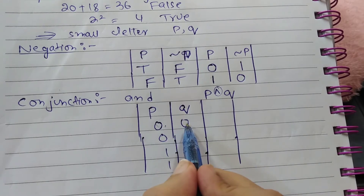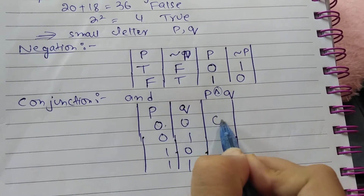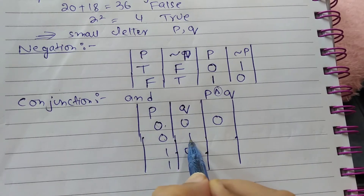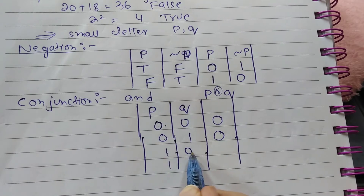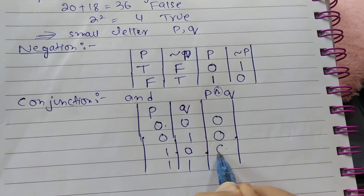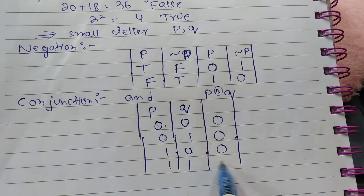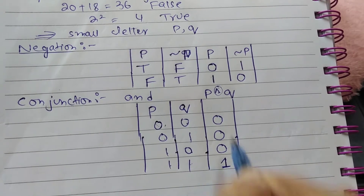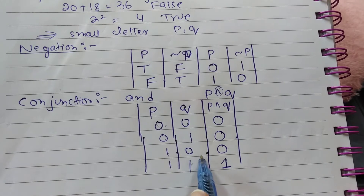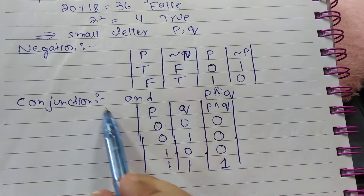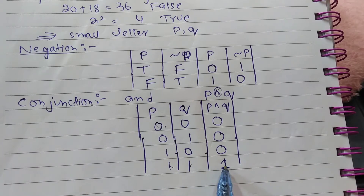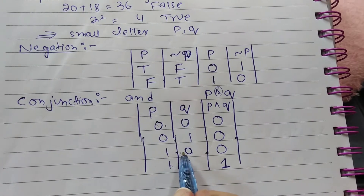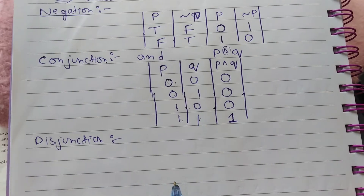The truth table of conjunction: if P is 0 and Q is 0, their AND is 0. If P is 0 and Q is 1, their AND is 0. If P is 1 and Q is 0, their AND is 0. Whenever conjunction is applied, both statements must be true for the answer to be true. If any one of them is false, the answer will be 0 or false.